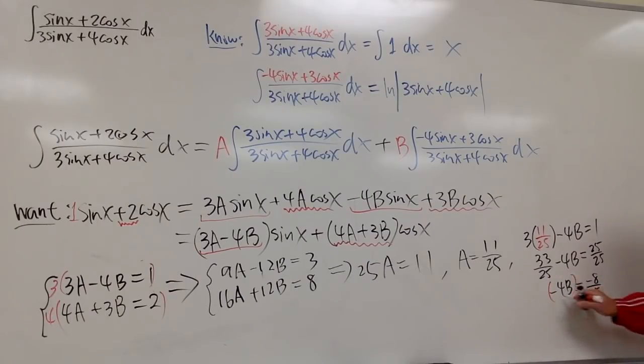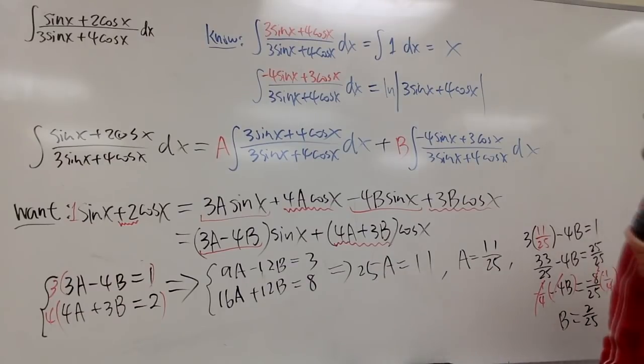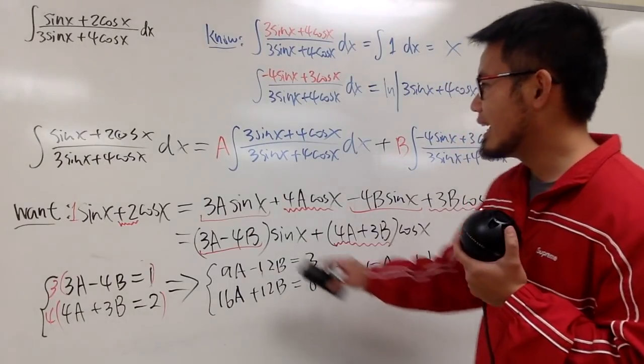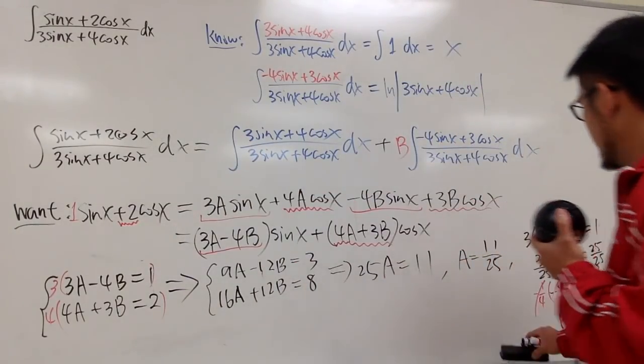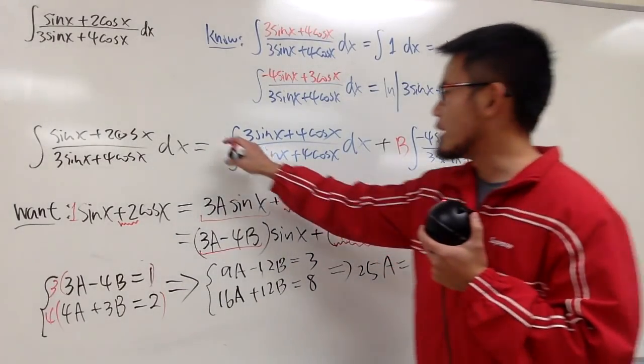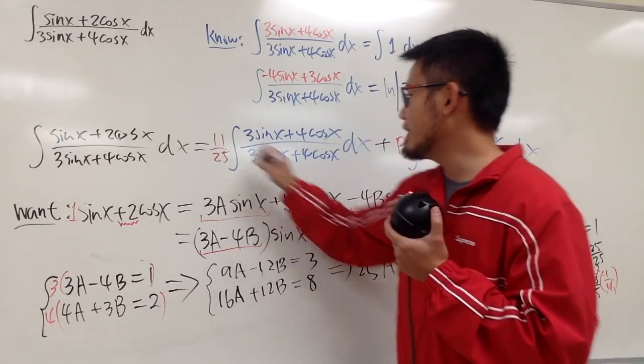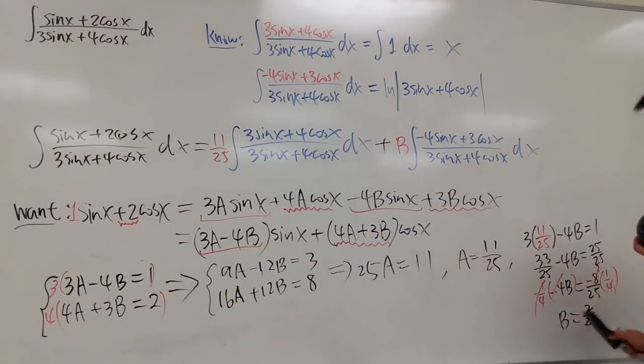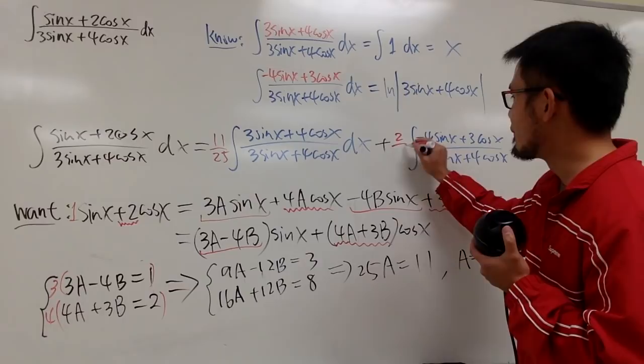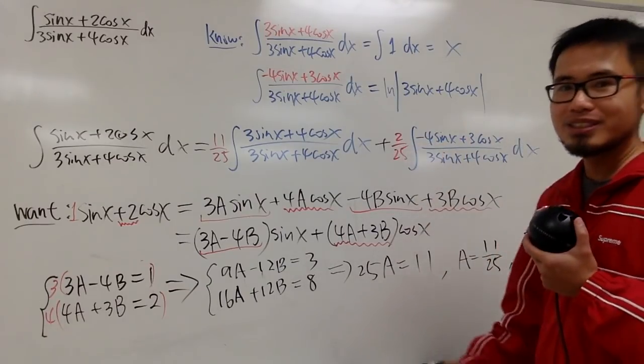And we can multiply both sides by negative 1 over 4. Multiply both sides by negative 1 over 4. And this is now cancel. We get b equal to reduce the little fraction. It's 2 and a positive. So positive 2 over 25. So you can see that a is 11 over 25. I will just now put down 11 over 25. And b is 2 over 25. I will just replace that with 2 over 25.